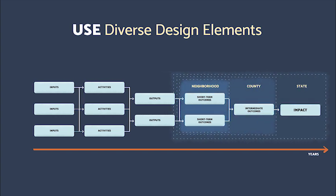The logic model appears on screen below the title 'Use Diverse Design Elements.' An orange timeline labeled 'years' appears below the model. Dotted lines encircle outcome columns at different scales: one labeled neighborhood around short-term outcomes, another labeled county around short-term and intermediate outcomes, and a third labeled state encircling all previous columns plus the impact column.